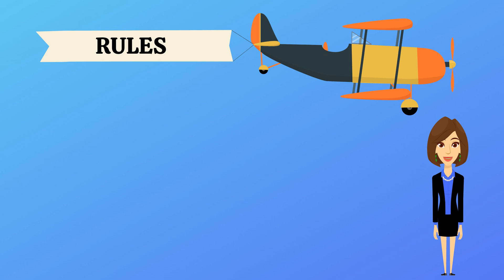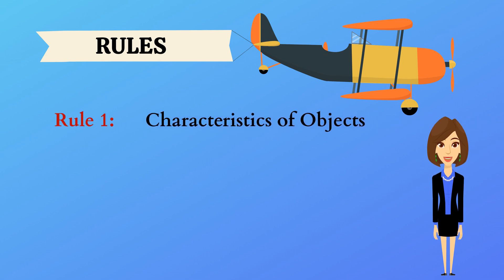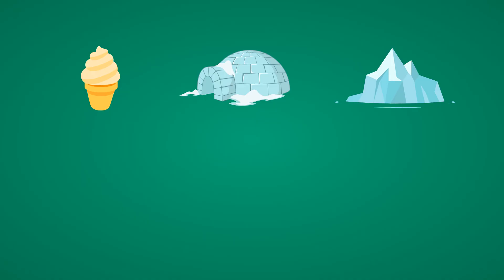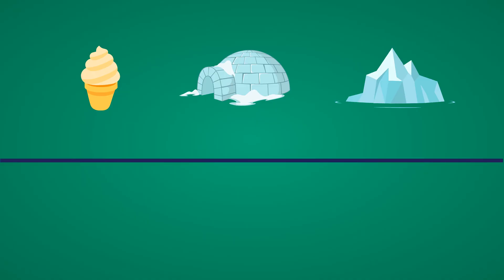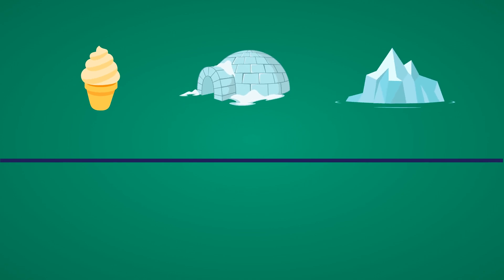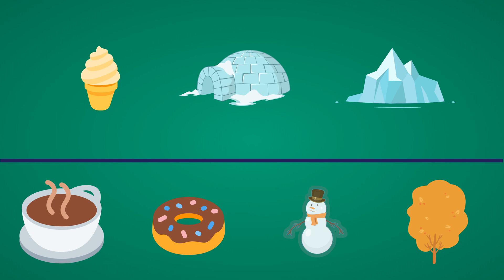Rule one: characteristics of objects. In the top row we have an ice cream, an igloo, and an iceberg. Cold is the characteristic common to these three items. In the answer choices we have a coffee cup, a donut, a snowman, and a tree. A snowman is made of snow, which is cold and similar to the top three items — hence snowman is the answer.